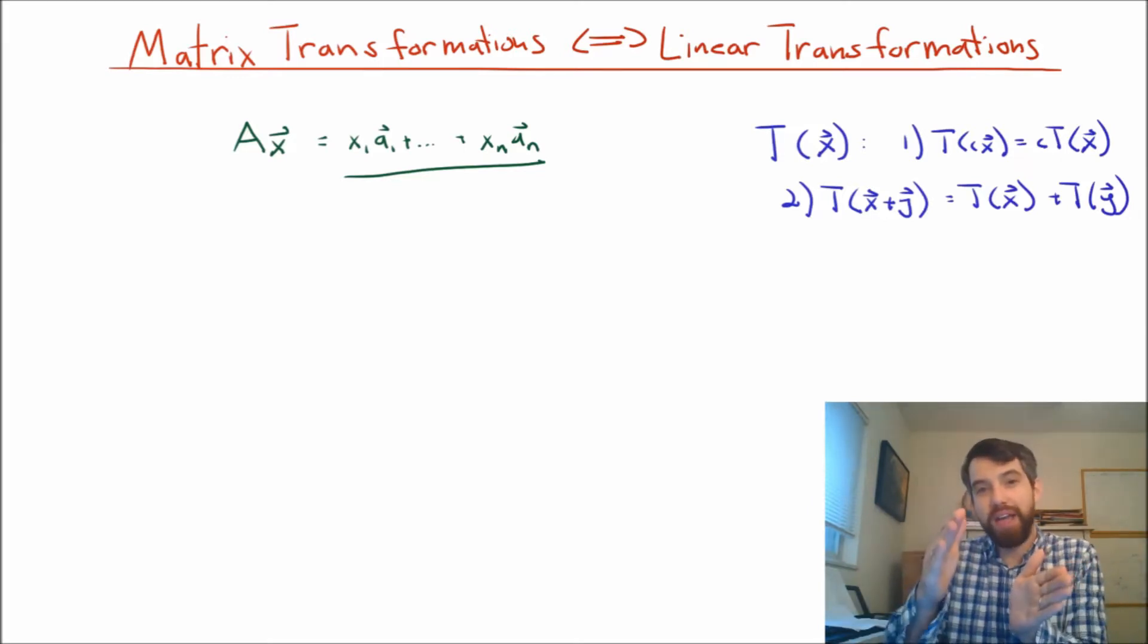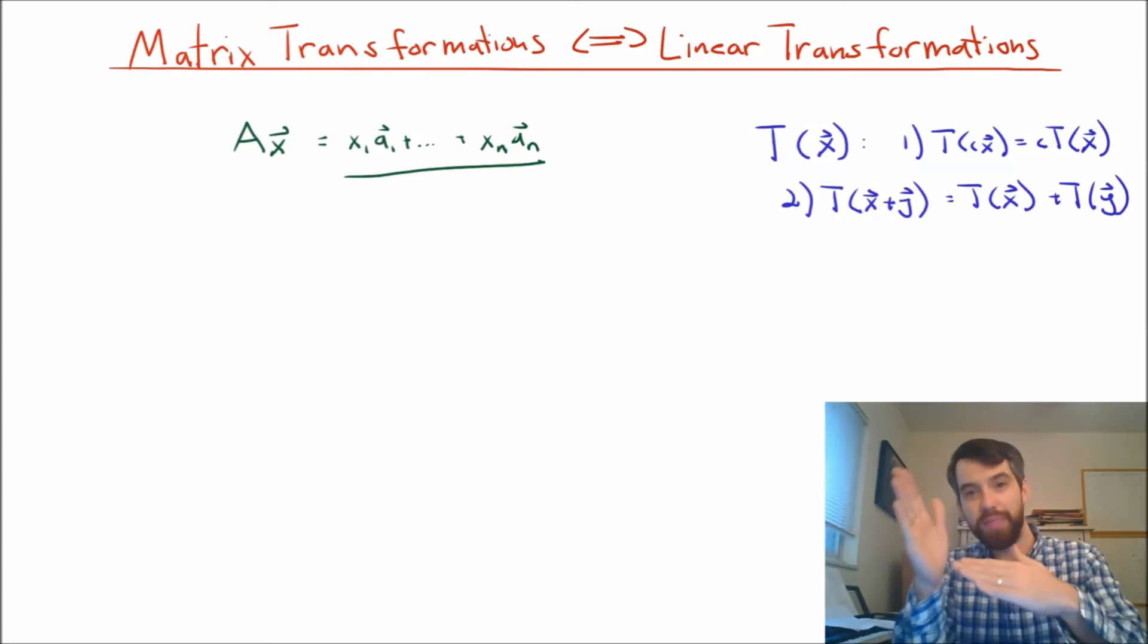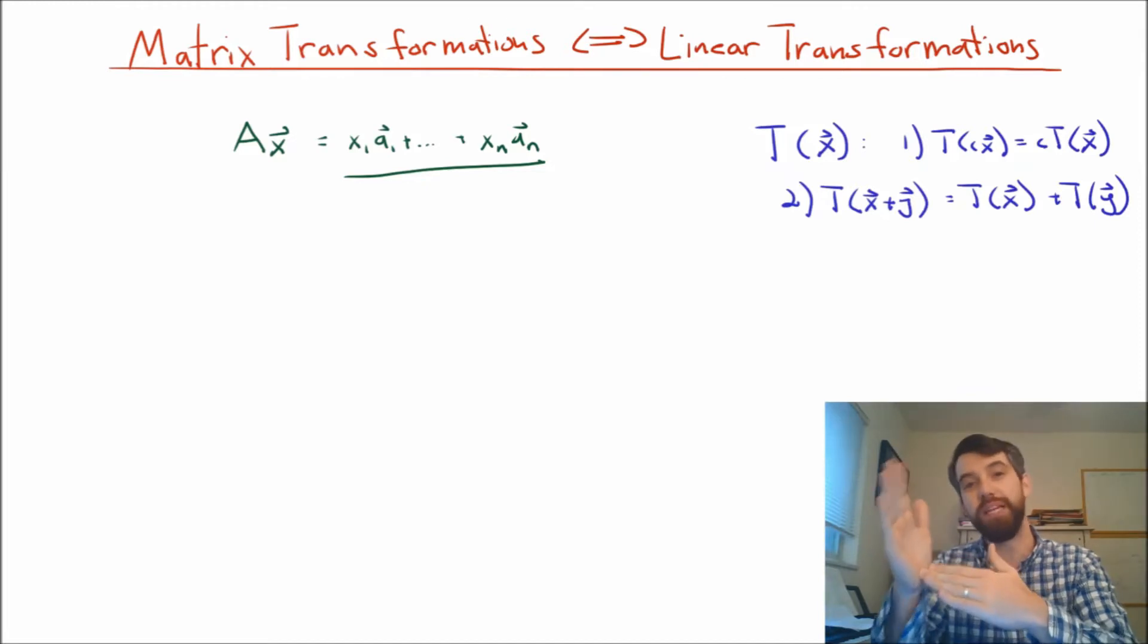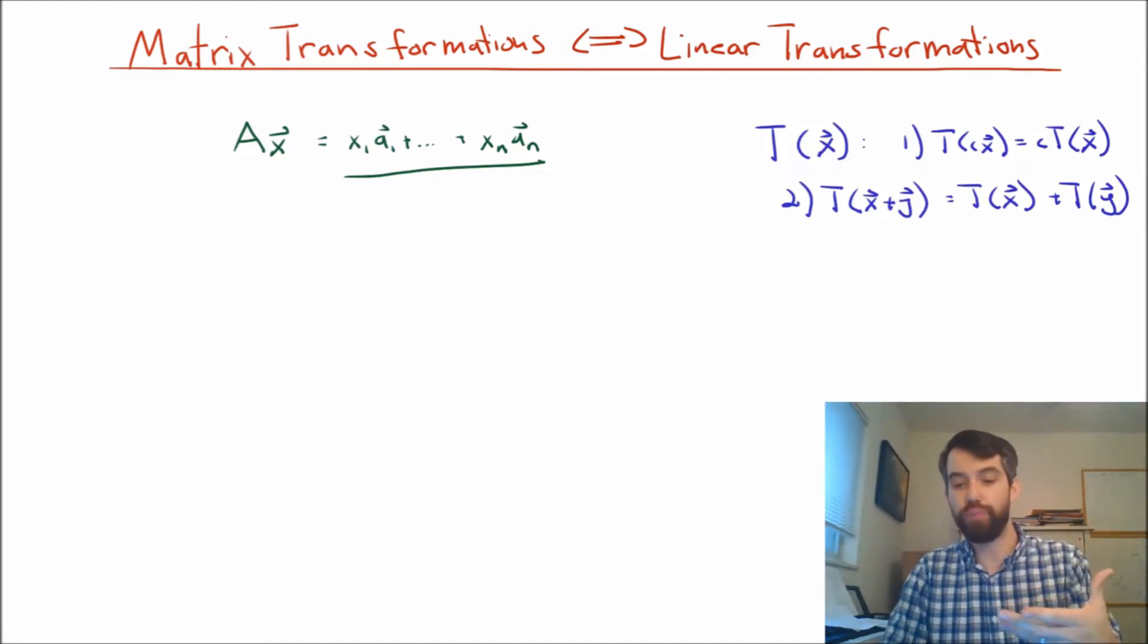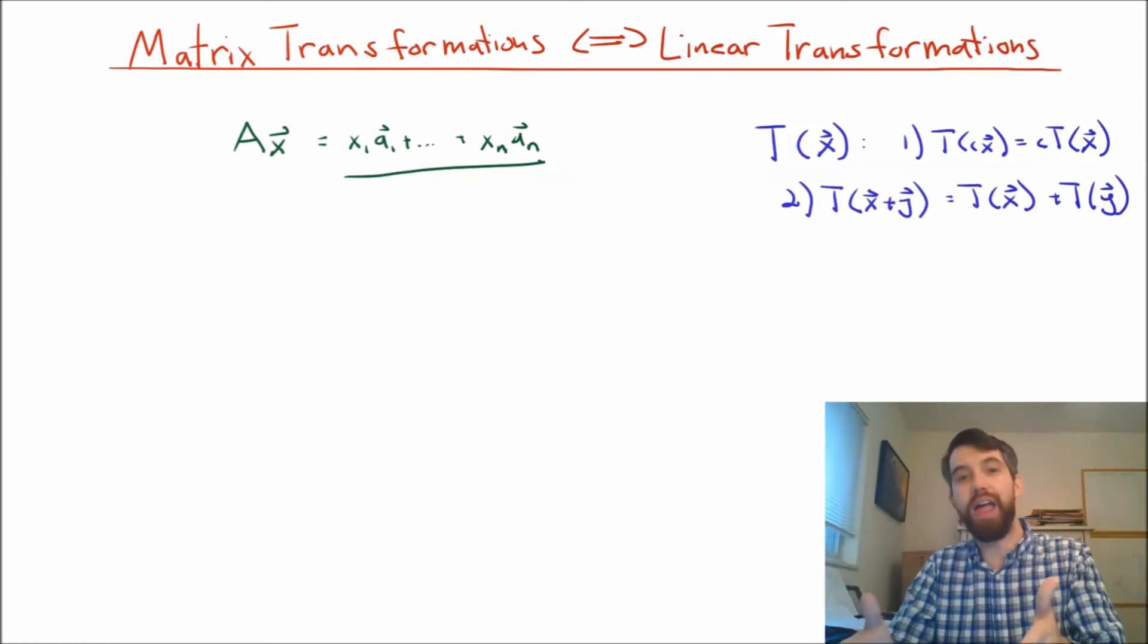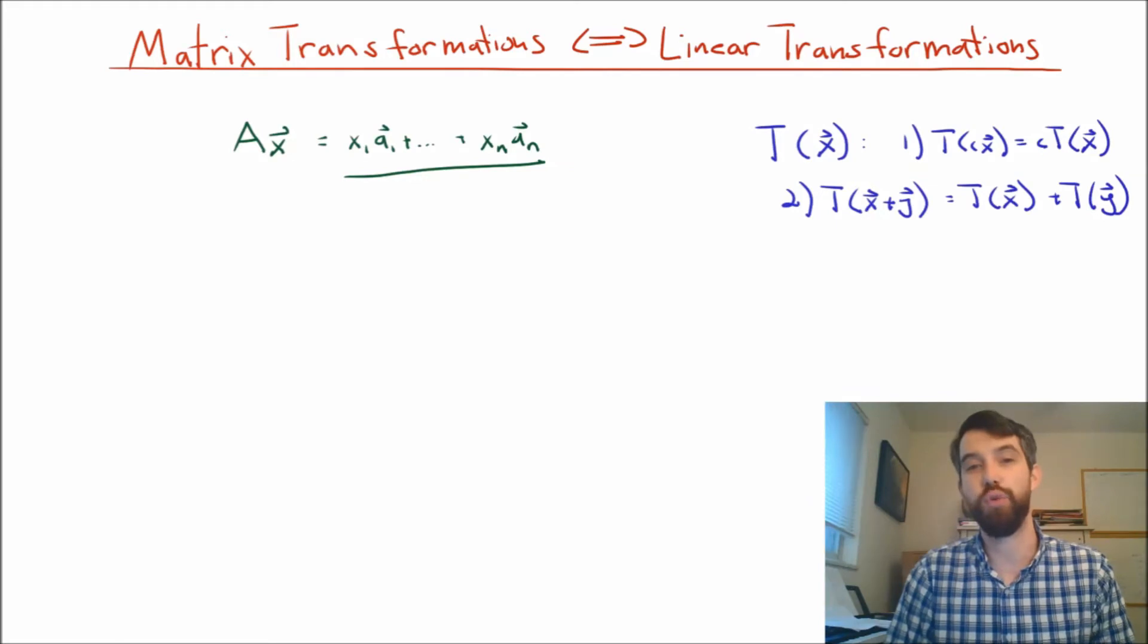And those two different nice operations that we have for vectors had really nice geometric meanings. Like, if we scaled by a vector, it would just stretch its length. And if we added two vectors, we had this sort of tip-to-tail geometric placement of vectors, and that's what we meant by vector addition. And while we had those two properties, linear transformations were defined to be those things that played nicely, or respected those two operations.